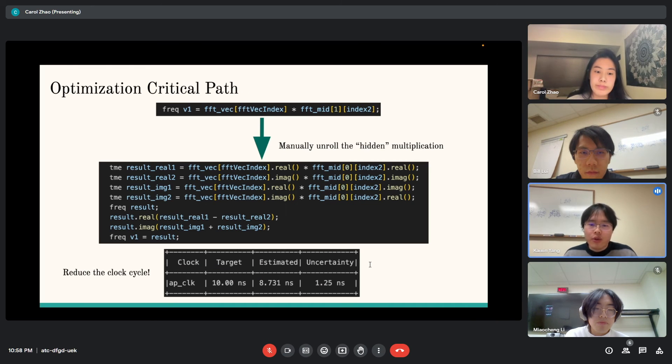Here we chose to manually split these into four real value multiplications and then combine these four to get the final result. By making the complex multiplication visible to us instead of hiding it into the invisible multiplication that is based on the std complex data type, we found that the clock cycle decreased by 1.5 nanoseconds and then we could generate the bitstream correctly.